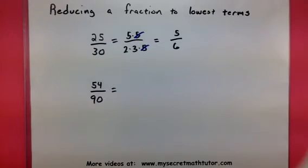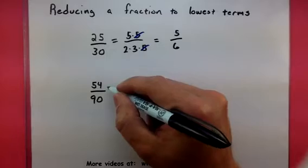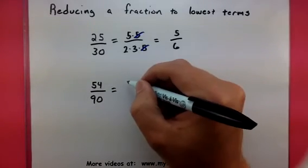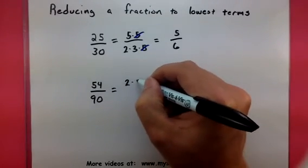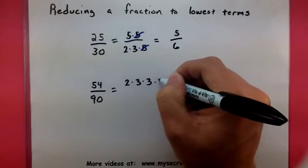Let's try this one more time with a number that has a few more common factors. So 54 over 90, the factors of 54 are 2, 3, 3, and 3.